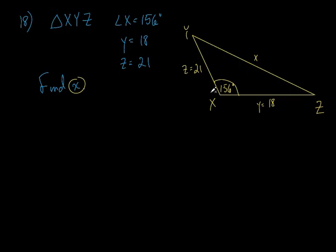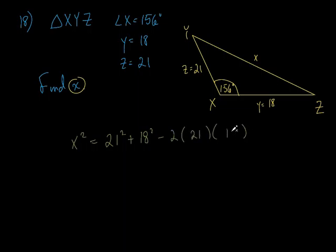How do we use the law of cosines? It starts off like the Pythagorean theorem. It's always the opposite side squared equals the other two sides squared, so: x squared equals 21 squared plus 18 squared minus 2 times 21 times 18 times cosine of 156 degrees. We'll plug all that into the calculator and take the square root to solve for x.